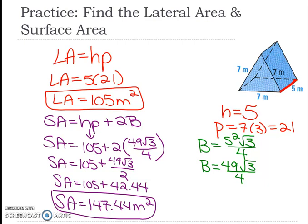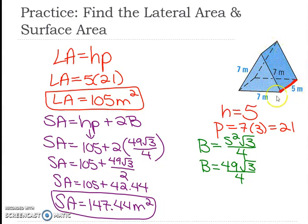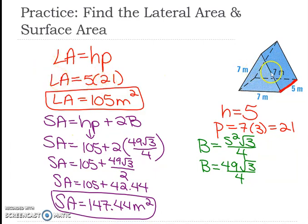This is surface area and lateral area part 2. I just wanted to explain this figure one more time. The lateral area is height times perimeter of the base. There are two bases — both are triangles. This is a triangular prism, so it looks like it's facing forward because there are rectangles around it. The height is 5, the perimeter is 7 plus 7 plus 7, which is 21. So 5 times 21 is 105 square meters — that is the lateral area just around the sides.